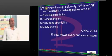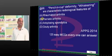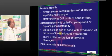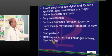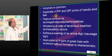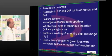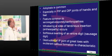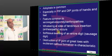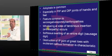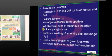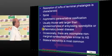Whiskering and pencil cup deformity are classical features of psoriatic arthritis, where there is erosion of one end of the bone and ivory falling. There is also soft tissue swelling of the digit called sausage digit. Enthesopathy is responsible for this, and whiskering is a very important and typical feature to remember.